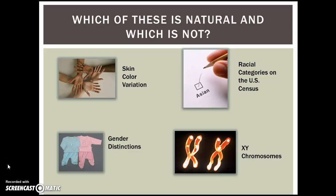Hi everybody. This lesson is on race and ethnicity for introduction to sociology. I want us to look at this slide again from culture and focus on the top part. Things like skin color variation, physical appearance such as nose shape, lips, hair texture, eye shape, height — all these things are naturally occurring in humans. However, when we start to put value into these physical features, then we're talking about the social construction of race. When we start to categorize people into different boxes and start valuing the people in those groups differently, we're talking about a system of race based on a hierarchy.